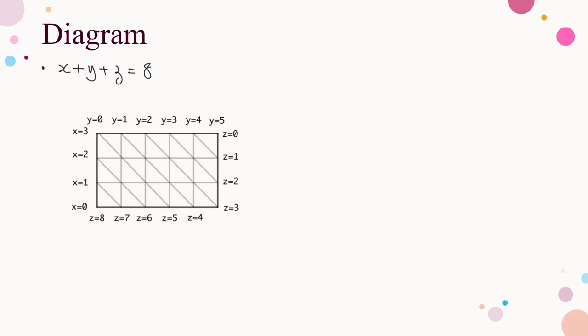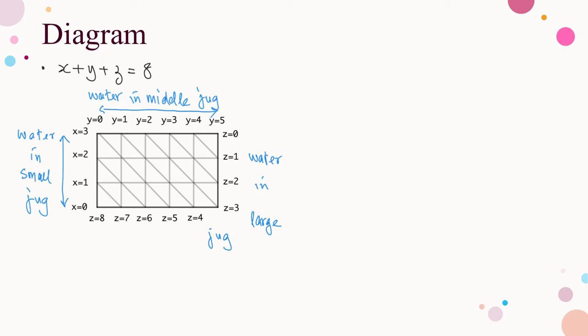Here is the diagram. Let me first explain how to interpret it. The vertical axis represents the volume of water in the small jug, so it goes from 0 to 3. The horizontal axis represents the volume of water in the middle jug, so it goes from 0 to 5. The volume of water in the large jug is represented by z and goes from 0 to 8. It is clear to read the data for x and y. Due to the relation x plus y plus z equals 8, the value of z can be obtained by calculation.